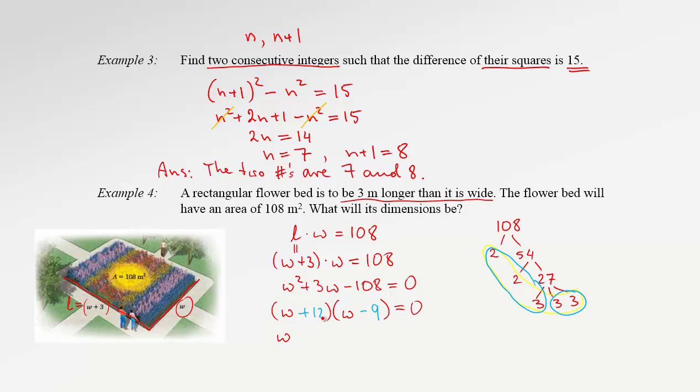Therefore, W from the first bracket is negative 12. Or, W from the second bracket could be 9. So, formally, we have two possible solutions to this quadratic equation. However, we are talking about geometric situation.